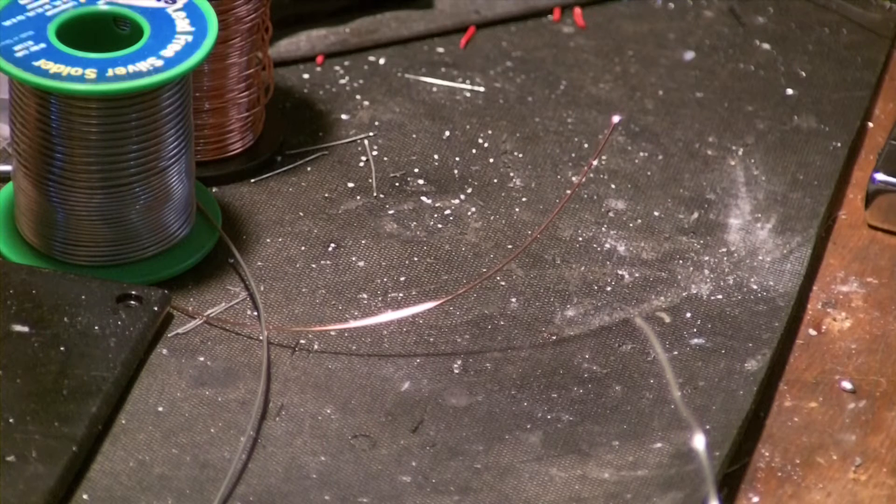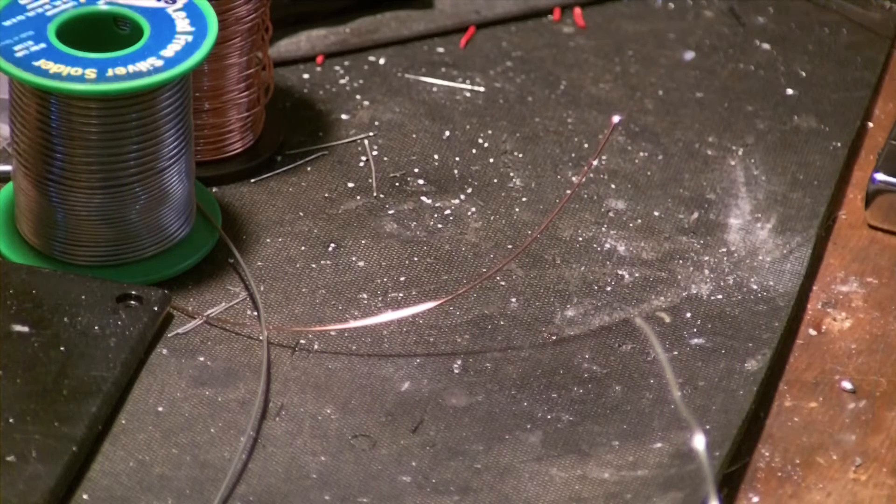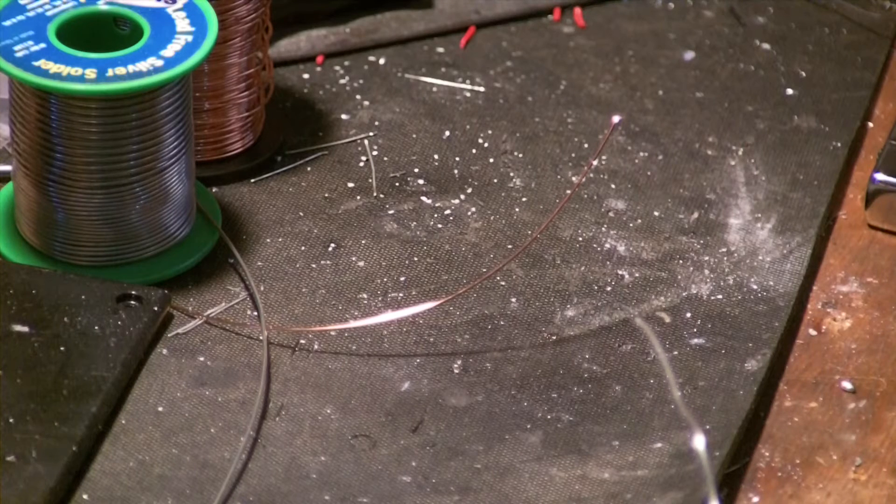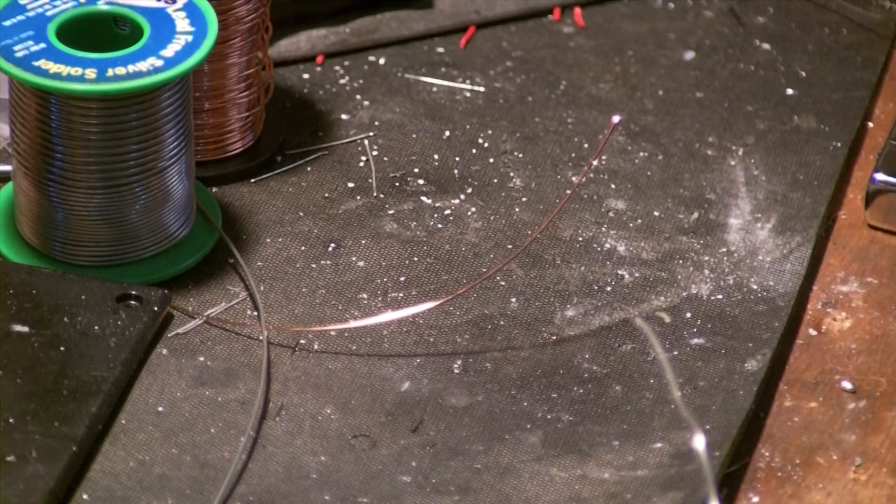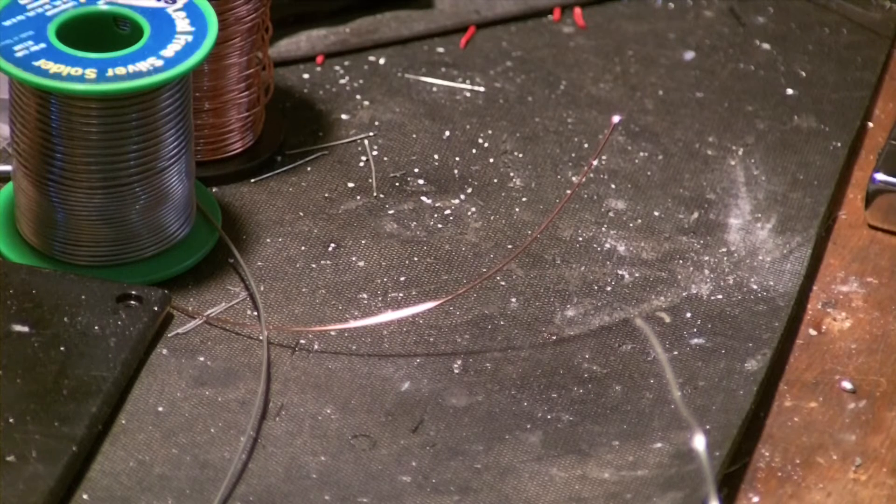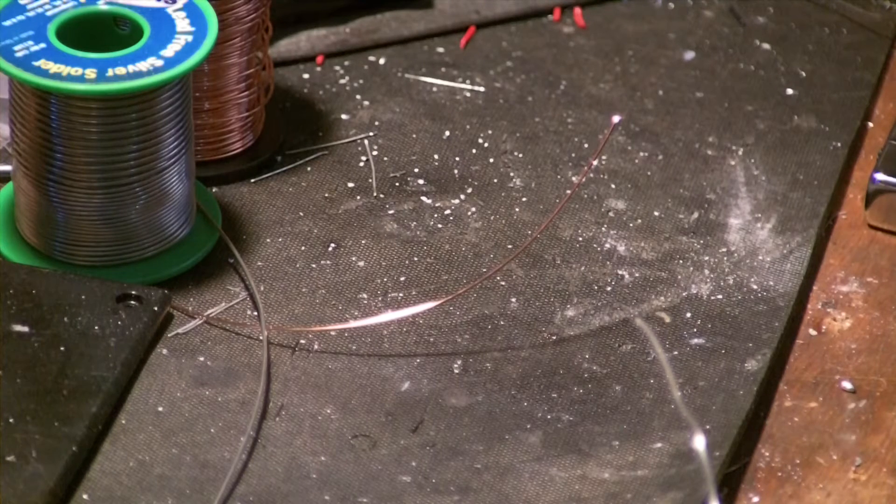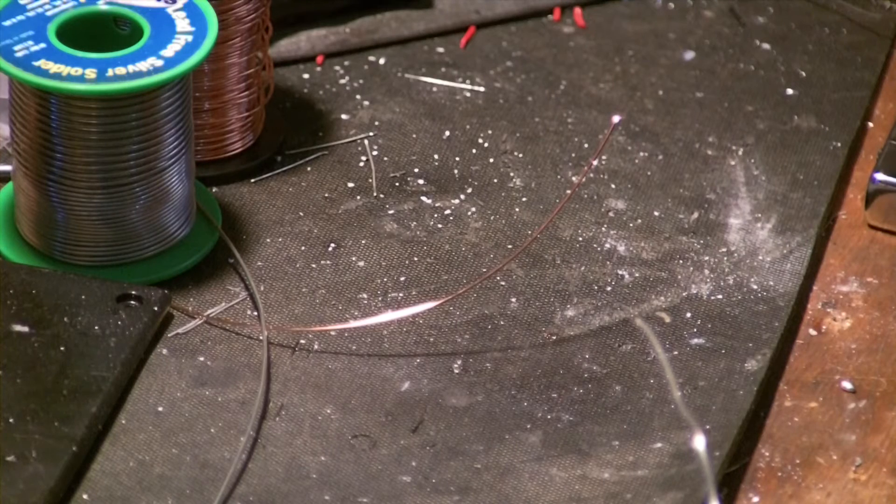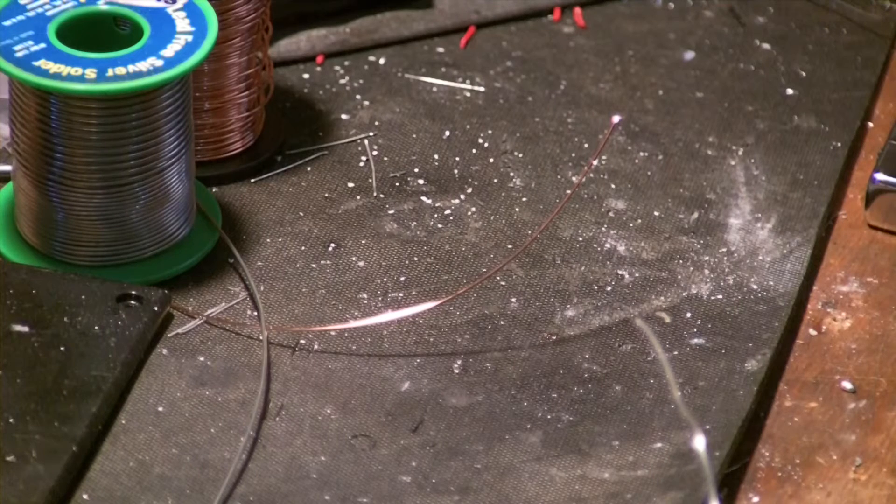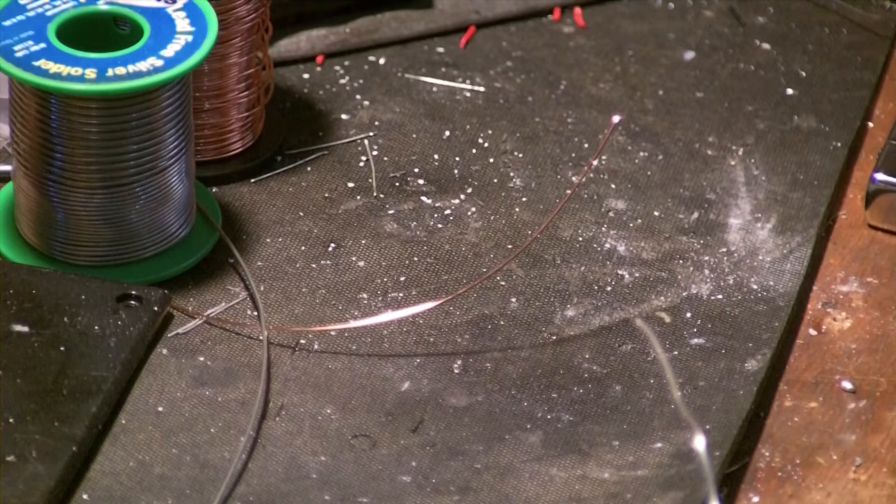I'm using lead-free silver solder which melts at a bit high temperature, I think it's about 225 degrees Celsius. It's a 4% silver content lead-free silver solder. And I'm using a temperature controlled Weller soldering iron. So here goes without further ado.